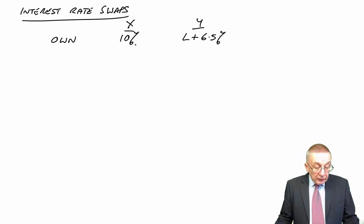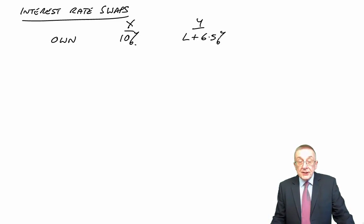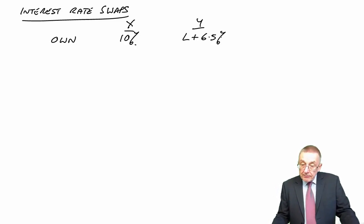You may wonder why Y borrows, they're having to pay more than X would have to pay. At fixed they'd pay 12% as against X is 10%, and floating LIBOR plus 6.5% as against LIBOR plus 3%. Well, surely that's quite normal. It depends on the company's credit rating. Company X presumably has a better credit rating. They can borrow at lower rates.